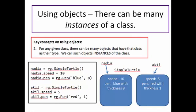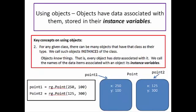The second key idea is that for any given class, there can be many objects that have that class as their type. For example, we might have two simpleTurtle objects, one of which has a blue thick pen while the other has a red thin pen. Similarly, we might have two point objects, one with xy coordinates of 250, 100 and the other with xy coordinates of 125, 300.